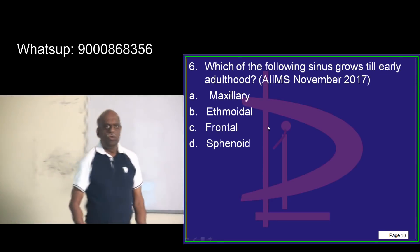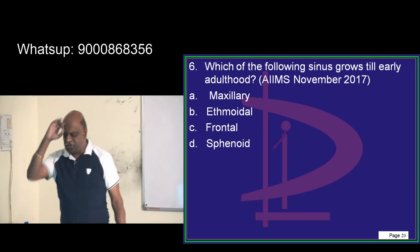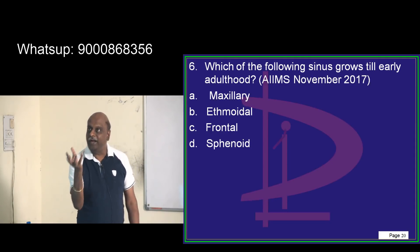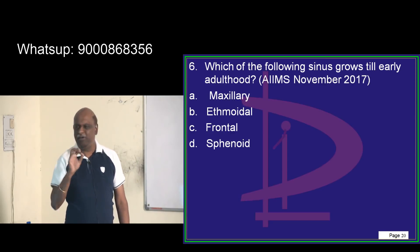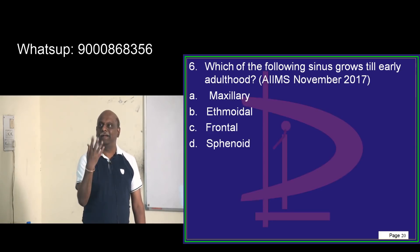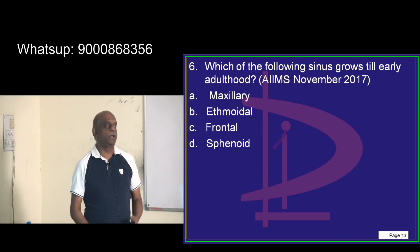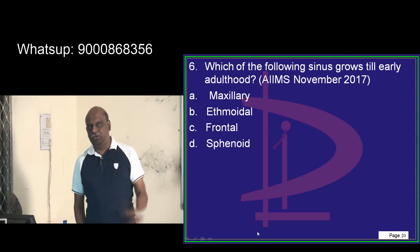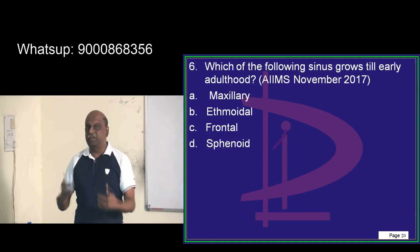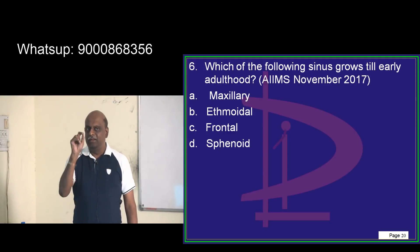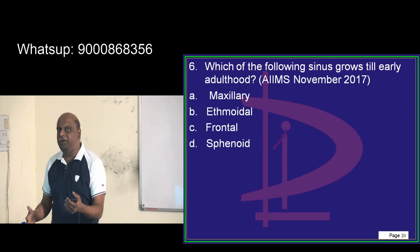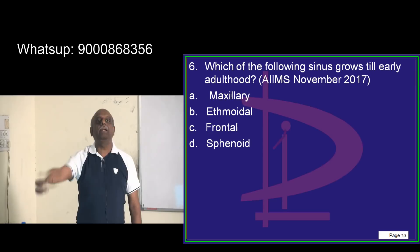In ENT, the most high-yield topic is paranasal sinuses — Water's view, different radiological views, which view is used for which sinus, how the sinuses grow, and which sinus first undergoes pneumatization. AIIMS November 2017 also tested this. If you feel unsure about this topic, review the paranasal sinuses anatomy and sinusitis in ENT, go through the DNB question bank video, and practice quizzes until you score 8 out of 10.